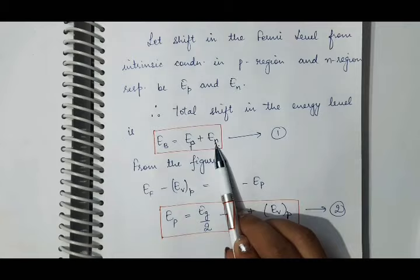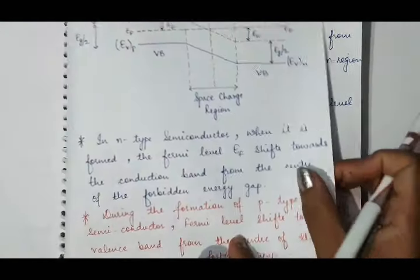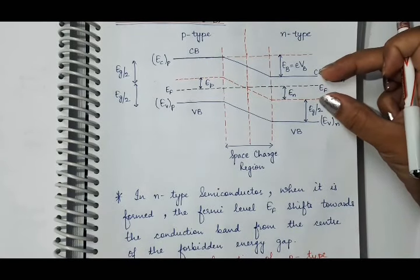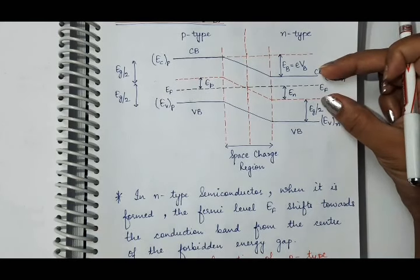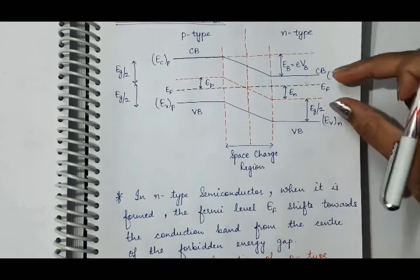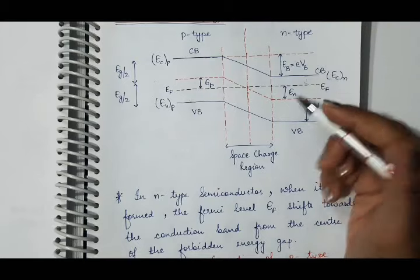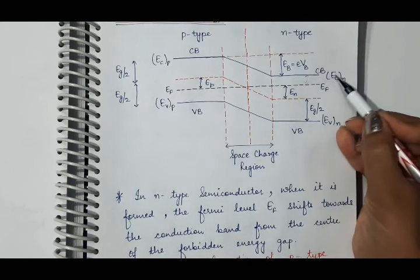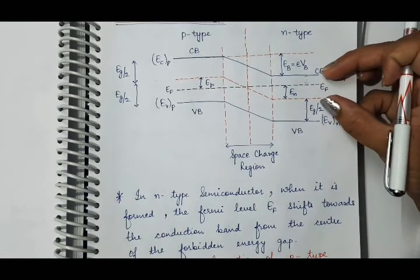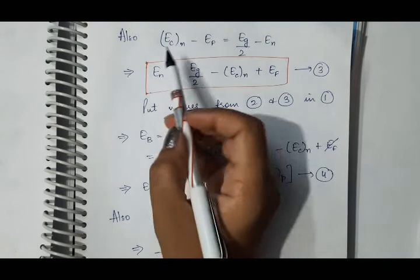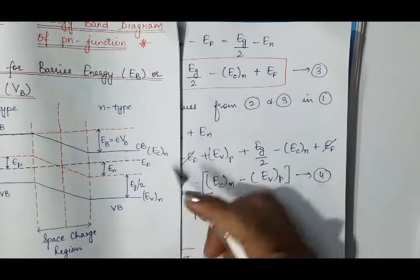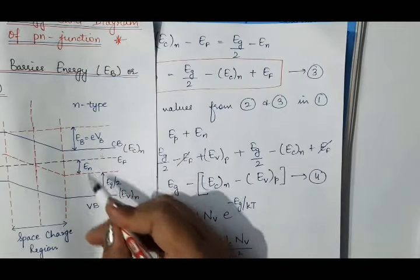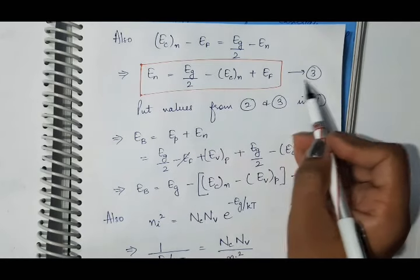Now we calculate the expression for En. For En, this whole energy is EG/2. So EG/2 minus En equals the energy ECN minus EF. Therefore ECN minus EF equals EG/2 minus En. From this we calculate the expression for En, which is equation number 3. Now we put both values of Ep and En into equation number 1 and we get the value for barrier energy. So barrier energy equals this — that is equation number 4.